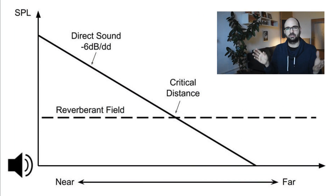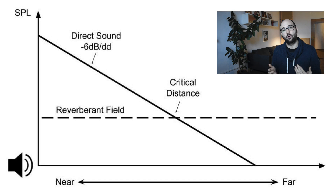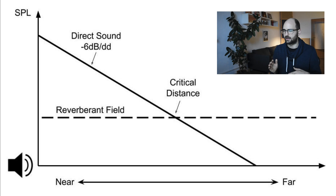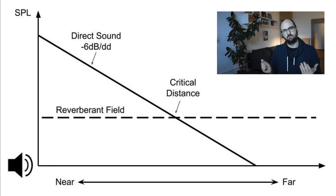In acoustics, we describe the relationship between the direct sound from your speakers and the reverberant field — the response of your room — with a variable called the critical distance. Basically, sound coming from your speakers will reduce in volume by half, by 6dB, with every doubling of distance. That's the inverse square law. At the same time, a reverberant field builds up in your room — you can think of it like a noise floor — meaning that wherever you are in the room, the sound level is the same. At some distance from the speakers, the level of the direct sound equals the level of the reverberant field, and that's called the critical distance.